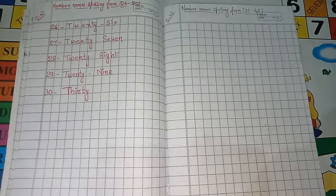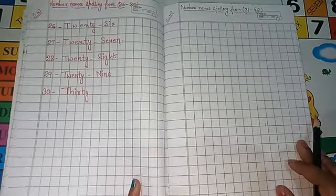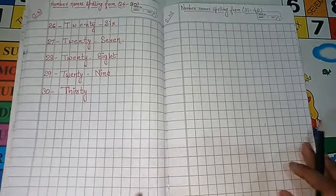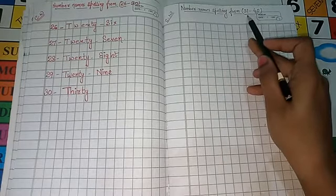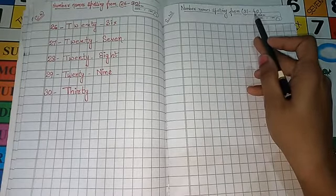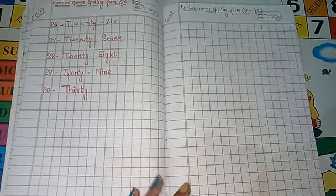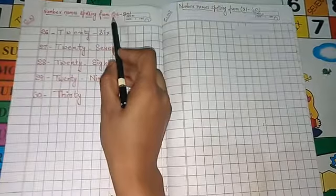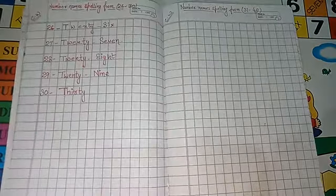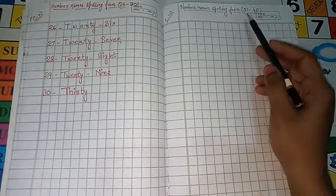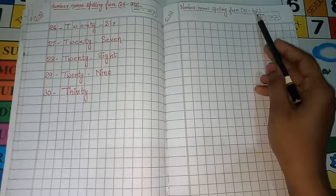Hello LKG students, good morning to all of you. Today we will learn number names spelling from 31 to 40. Before we have learned number names spelling from 26 to 30, and today we will learn from number 31 to 40. So let's move.